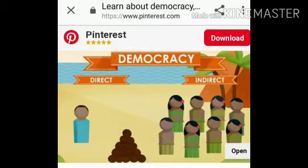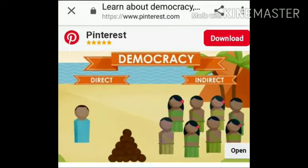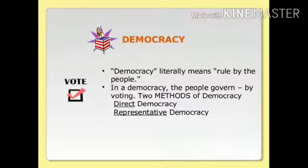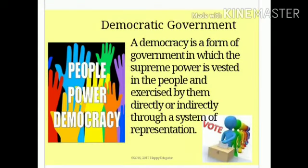Democratic form of government. Democracy is a form of government created by the people. According to Abraham Lincoln, democracy is a government of the people, by the people, and for the people. In a democracy, the actual power lies in the hands of the people, so the people elect their representatives through elections, who in turn run the government. The government is answerable to the people for all their decisions and policies.